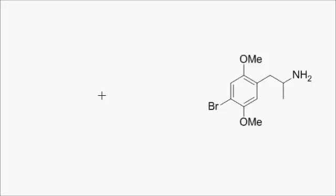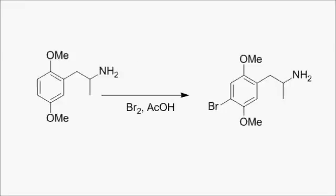DOB is the simplest to make. Elemental bromine in glacial acetic acid performs a regioselective electrophilic attack, forming only the desired product. Bromine is fairly easy to handle, as it's a liquid at room temperature.